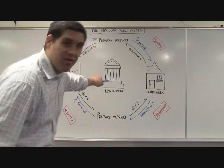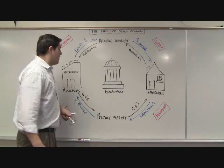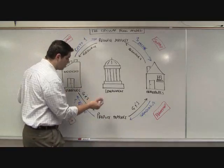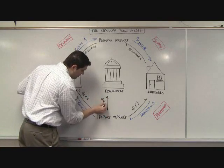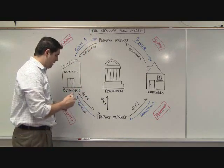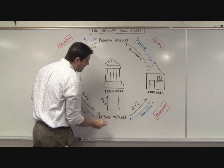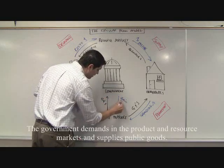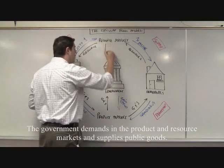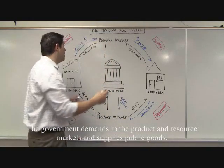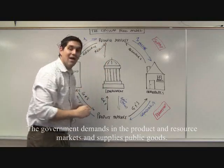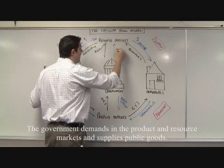Now let's find out what the government does. The projector, this board, that screen — all this stuff was purchased by the government. So the government also buys goods and services. This wasn't made by the government; it was purchased from some individual firm. To do it, they had to give them money — this is government spending. At the same time, the government hires workers and gets resources, in this case labor, and they've got to pay for that labor. So money coming out is government spending.